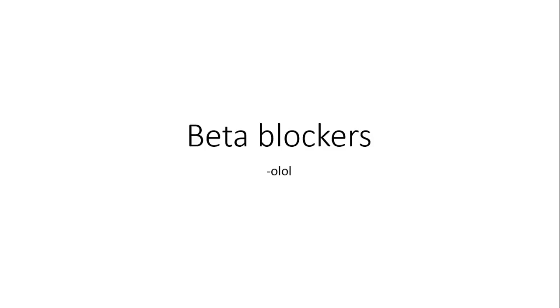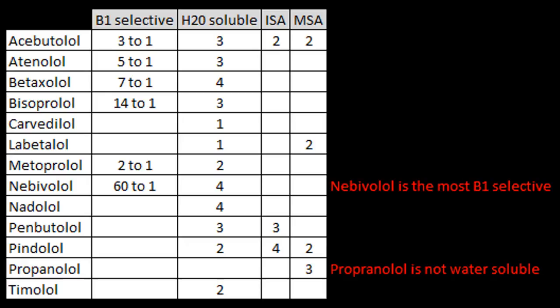This is a little discussion on beta blockers, and mostly this has some silly mnemonics to help you remember some random facts about them. First of all, this is the chart that we're going to be extracting information from. These are the different beta blockers, and about half of them are beta-1 selective. Only one of them is not water soluble, although there are two other ones that are not very water soluble.